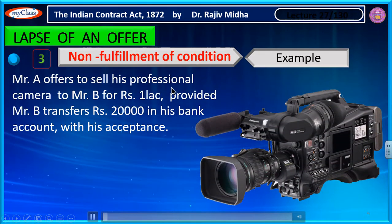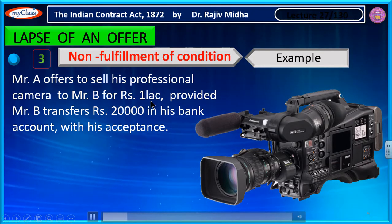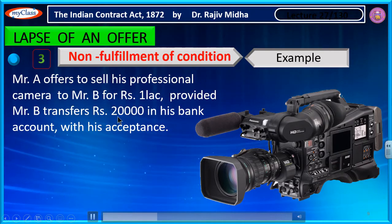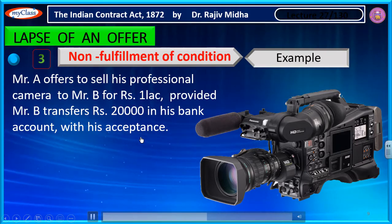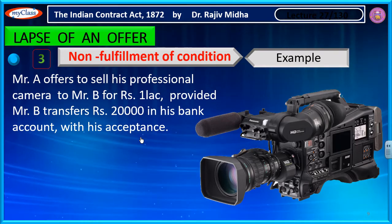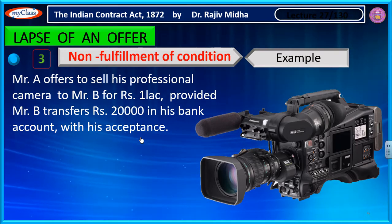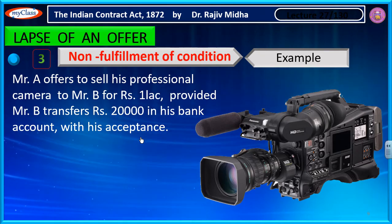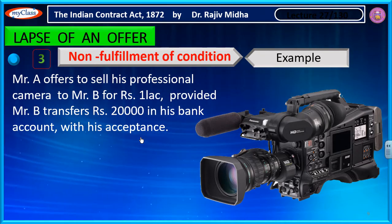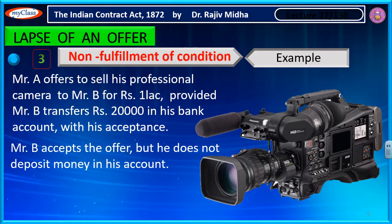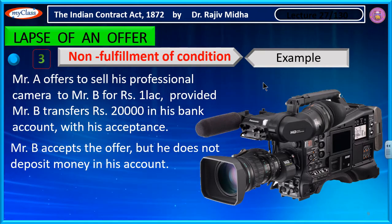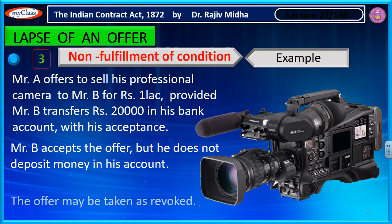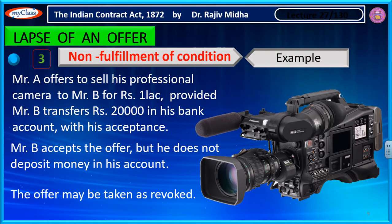Mr. A offers to sell his professional camera to Mr. B for Rs. 1,00,000, provided Mr. B transfers Rs. 20,000 in his bank. In this case, if the condition is not fulfilled, the offer may be taken as revoked.